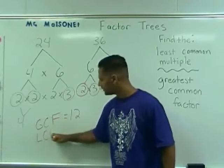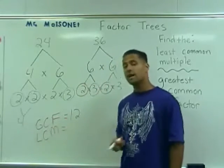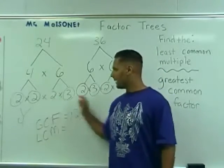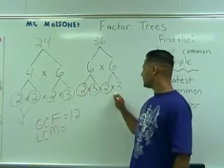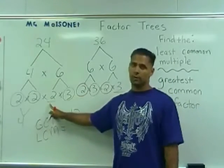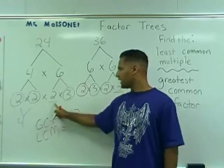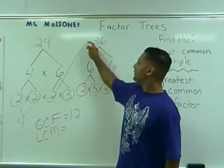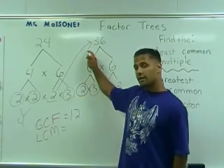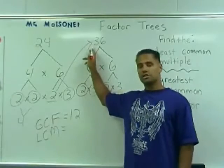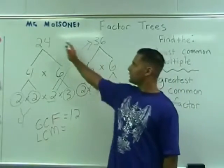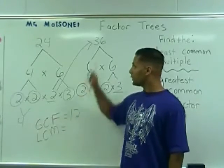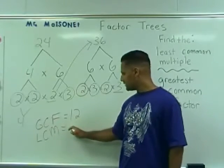Now what about the least common multiple? To find the least common multiple of 24 and 36, after you have circled the matches, underline the number that you did not circle. Sometimes you will be underlining more than one digit, but in this case we only have one uncircled digit. You take that uncircled digit and multiply it by the top number of the factor tree on the opposite side. In this case, we have 2 times 36, which is 72. Or you can do 3 times 24, which would also give us 72. So the least common multiple of 24 and 36 is 72.